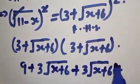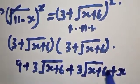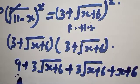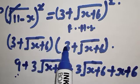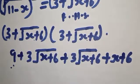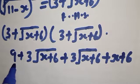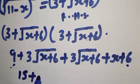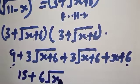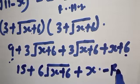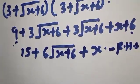Then square root of (X plus 6) times 3 gives another 3 root (X plus 6), and square root of (X plus 6) times square root of (X plus 6) gives (X plus 6) because the square roots cancel. So combining: we have 9 plus 6 root (X plus 6) plus X plus 6, which gives us 15 plus 6 root (X plus 6) plus X as our right-hand side.